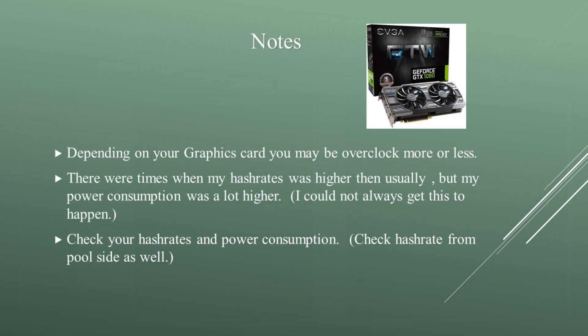For some final notes: depending on your graphics card you may be able to overclock a lot more or a lot less. For example, I have a GTX 1080 FTW Edition where I was able to put the memory to 1000, which is the max when mining Ravencoin. There were times when hashrates were a lot higher than usual but power consumption was higher as well. So check your hashrates and power consumption when mining Ravencoin, and check your hashrates from the pool side as well.